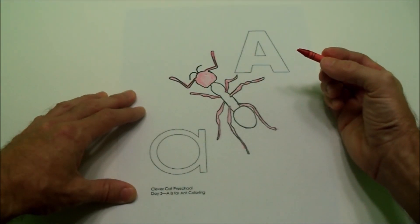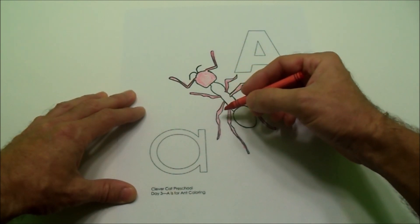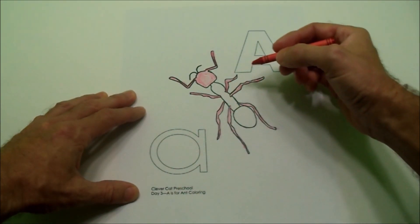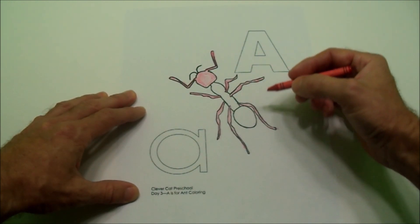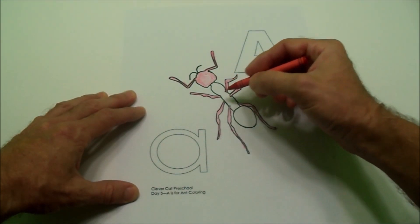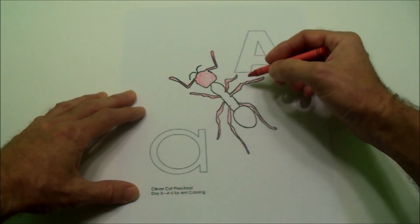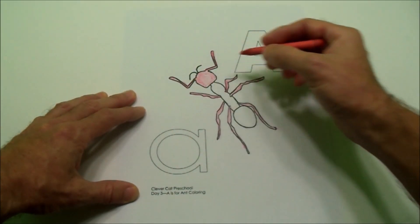How many legs does this ant have? On the left side we have one, two, three. On the right side we have one, two, three. All the legs are one, two, three, four, five, six. Six legs. And these are antenna.